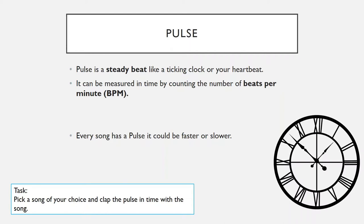So the first task I'd like you to do is to pick a song of your choice — any song — and have a go at clapping in time with the pulse of the song. Here's a little example: I've selected a song called Back in Black by AC/DC, and I'll talk through it and clap along so you'll hear me clapping along to the pulse of the song.